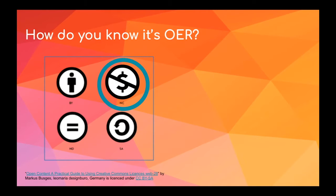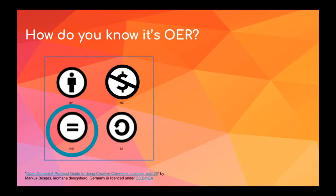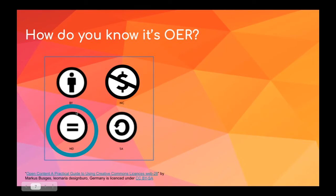There is non-commercial, or NC, which means others can copy, distribute, display, and perform the work and derivative works based upon it, but for non-commercial purposes only. Then we have no derivative works, ND, which means others can only copy, distribute, display, and perform verbatim copies of the work, not derivative works. This condition is one you won't see on an OER because OER is based on those 5 R's — a big component of which is the ability to remix, reuse, and revise. The no derivatives condition might appear on other open material, but not necessarily an open educational resource.